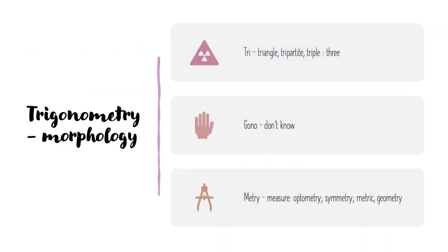As an example, I've chosen the word trigonometry, which you will know from maths. So if we look at the morphology of trigonometry — the parts that make it up — the first part, I do recognise tri. I recognise that from triangle, tripartite, triple, and I know that tri means three. So I know that this word trigonometry has something to do with three. The middle bit, gono, I don't know — I'm not sure about that, I'll have to look that up.